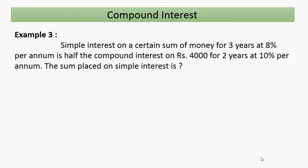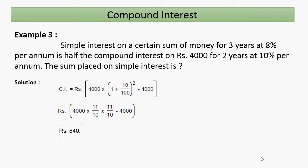Another example: simple interest on a certain sum for three years at eight percent per annum is half the compound interest on rupees 4,000 for two years at ten percent per annum. Find the sum placed on simple interest. First, compute CI on 4,000: 4,000 × [(1 + 10/100)^2 − 1] = rupees 840.